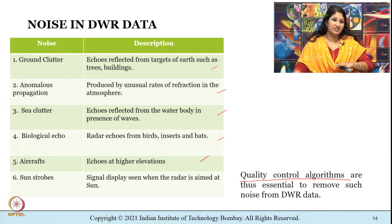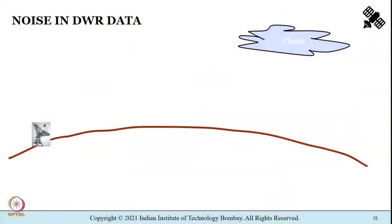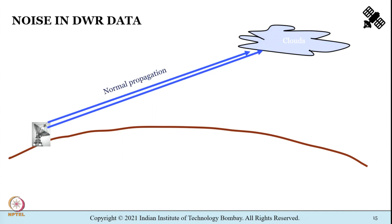Before radar data can be used to estimate precipitation, it is essential to clean the data — what we call quality control of radar data. Whenever there are clouds with hydrometeors, normal propagation occurs, but sometimes there is abnormal propagation due to significant variations in the refractive index of the atmosphere, causing radio waves to hit the surface of the ground or sea.